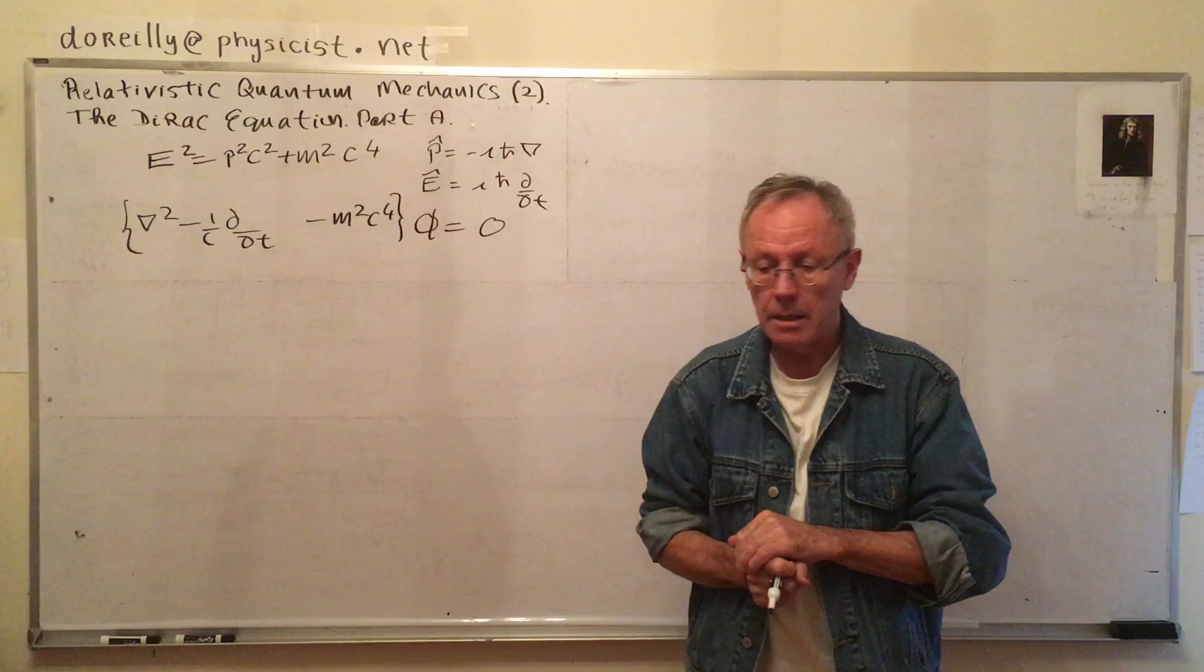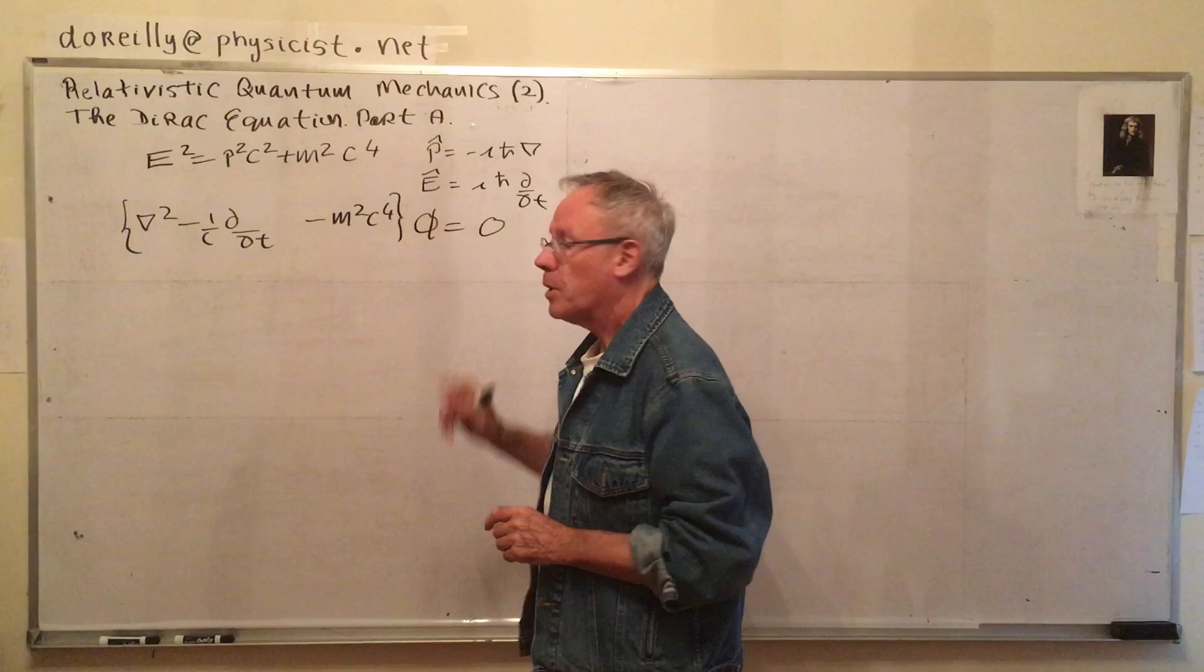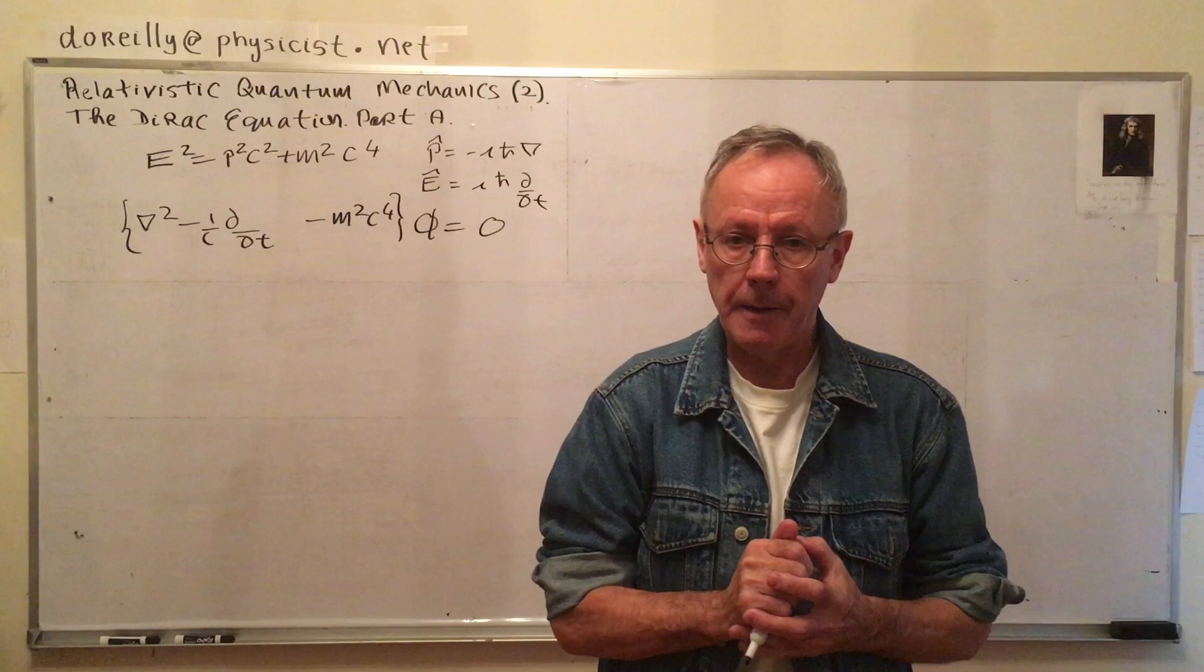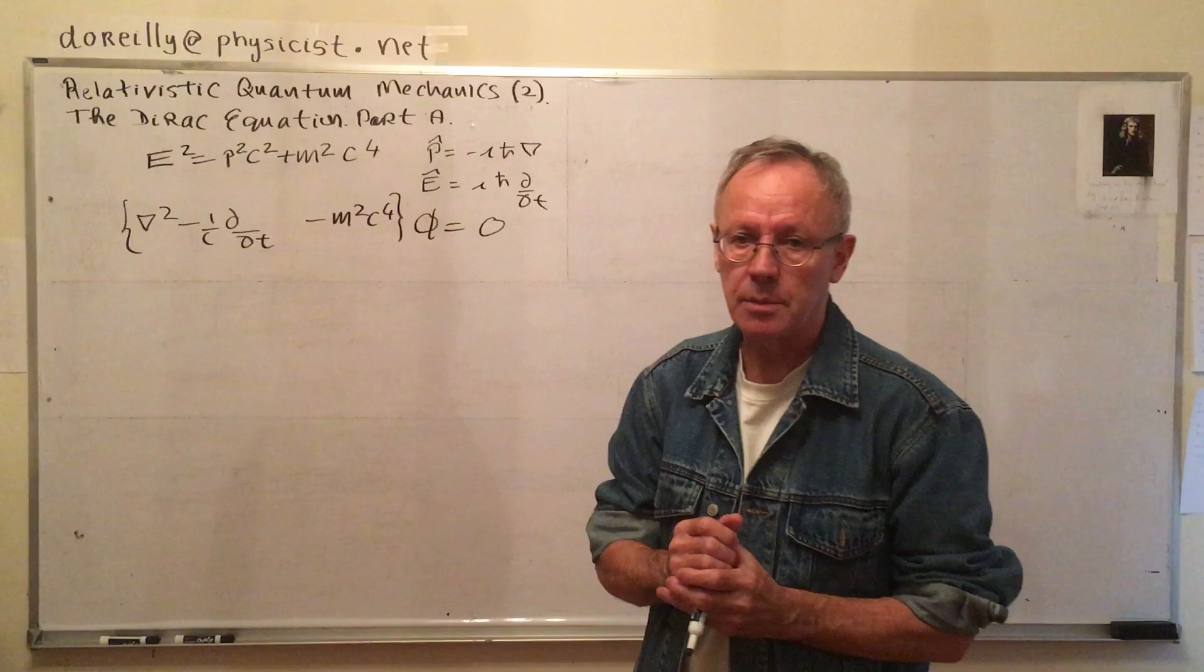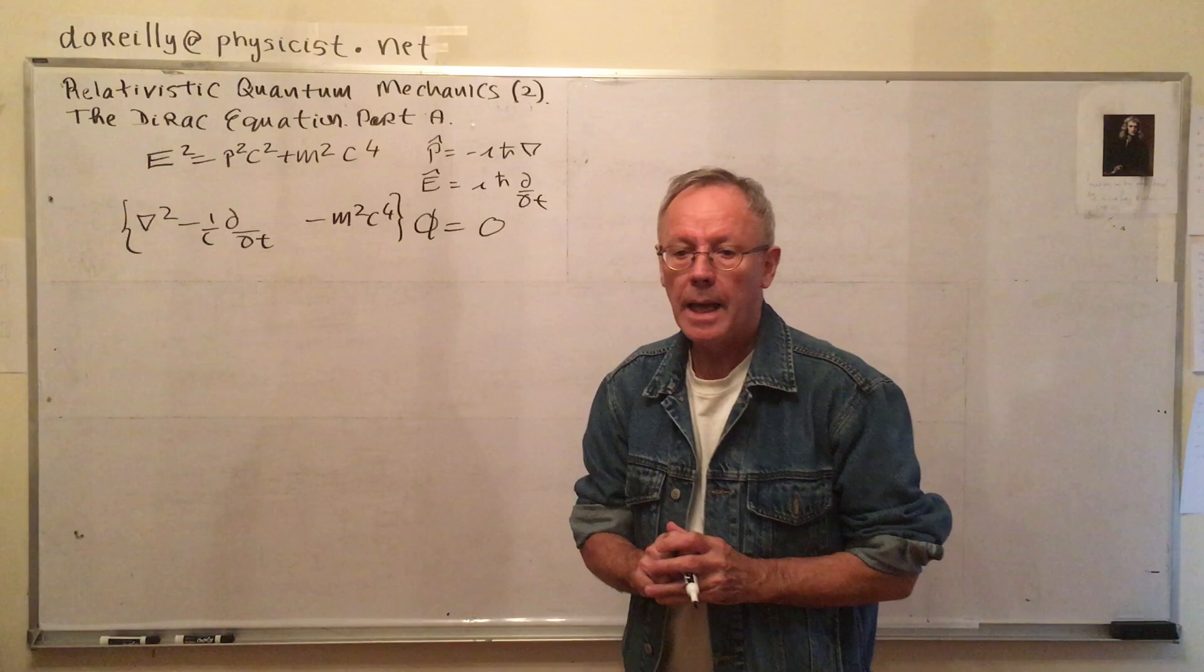So we want to go from the Klein-Gordon equation now to a field whose solution contains spin. In other words, that extra degree of freedom, intrinsic spin if you like, and it's still not fully understood what it is, but it's certainly an extra degree of freedom. And angular momentum comes into this.